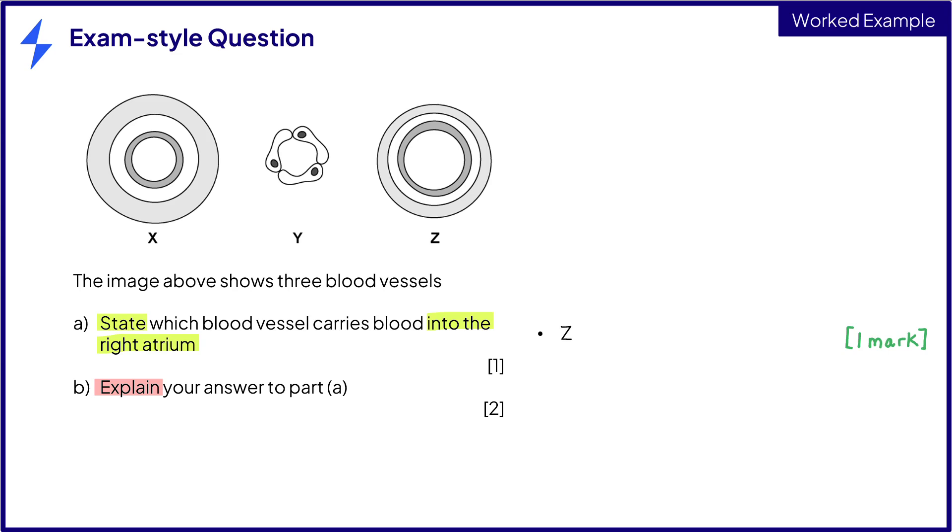Now on to part B and explaining our answer. So we can say that the vessels that enter the heart are veins for one mark. And we can also say that Z is a vein because it has a larger lumen and thinner walls. This would be your second mark.